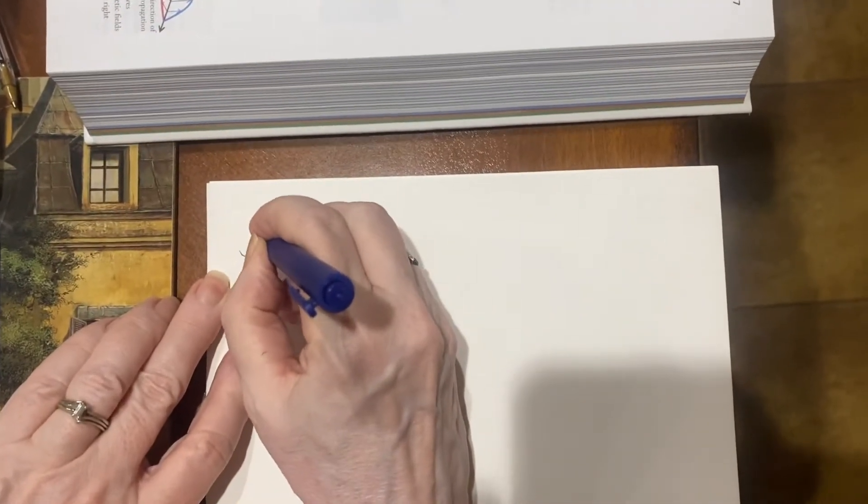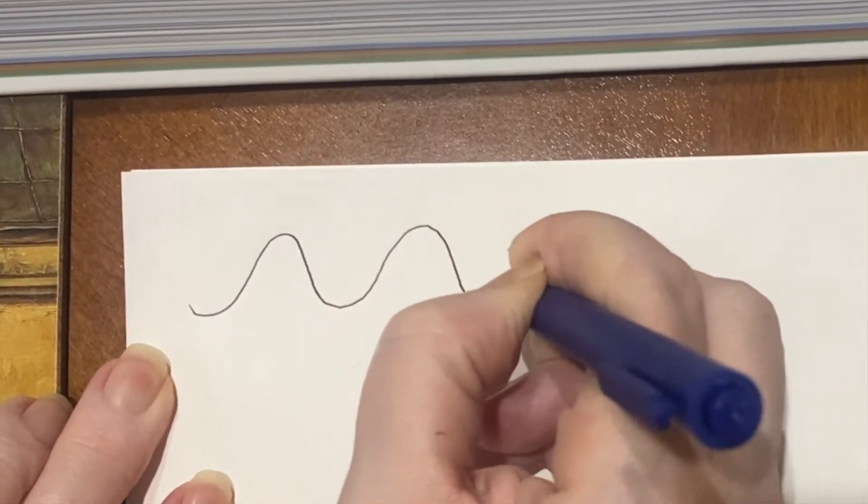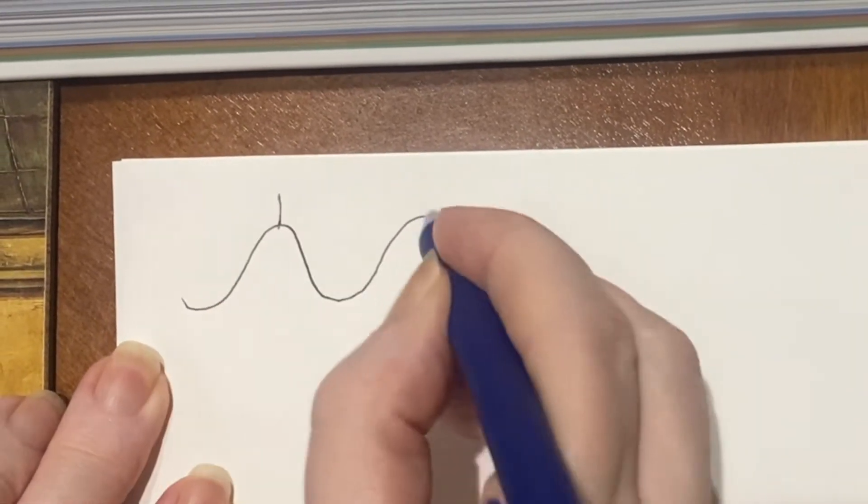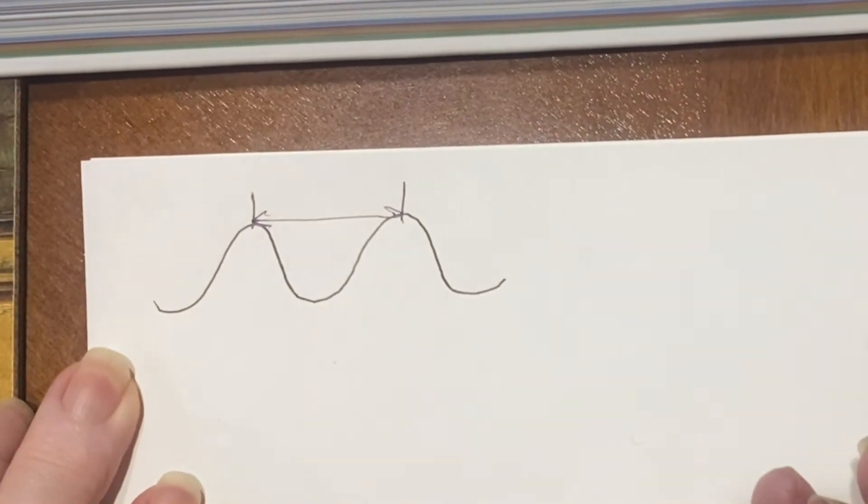If I have my wave, and I'll draw this as a sine wave because that's kind of what it is. This is a wavelength. One wave crest to another. That's your wavelength.